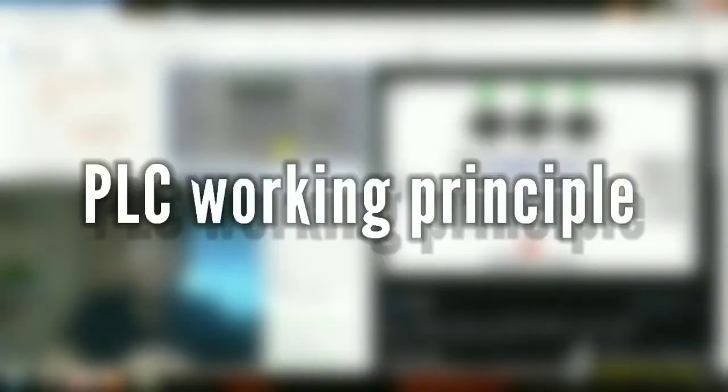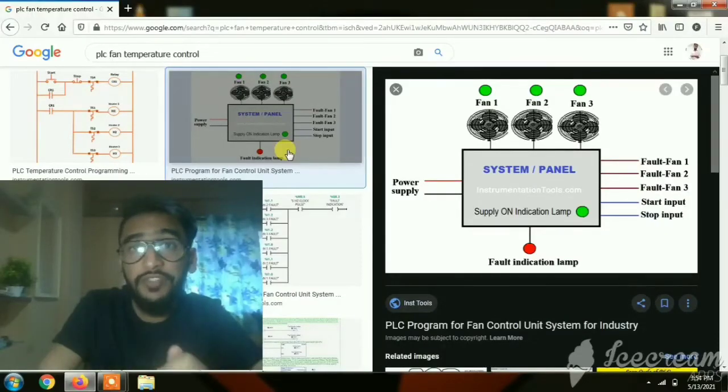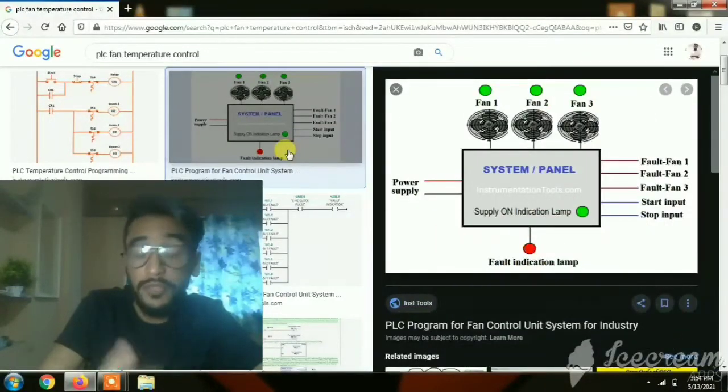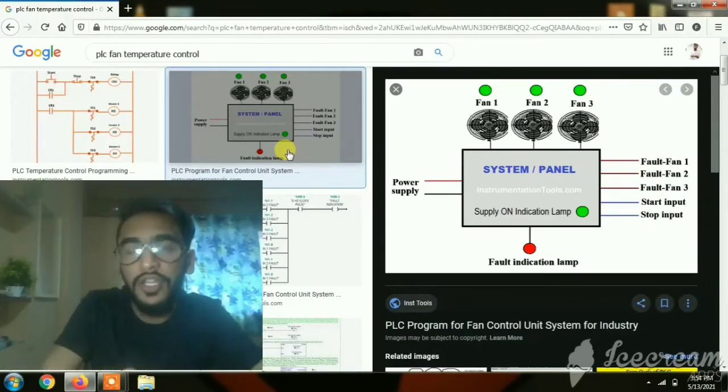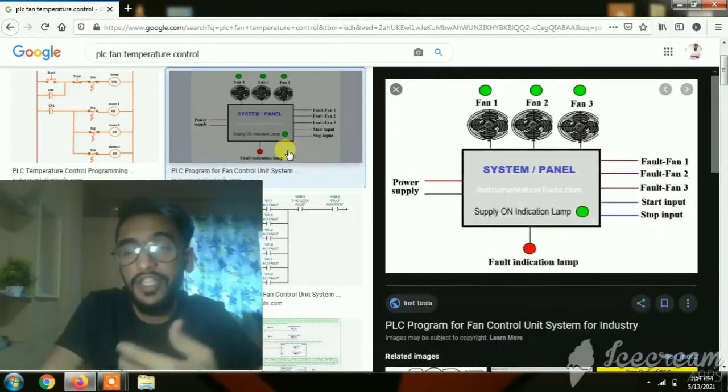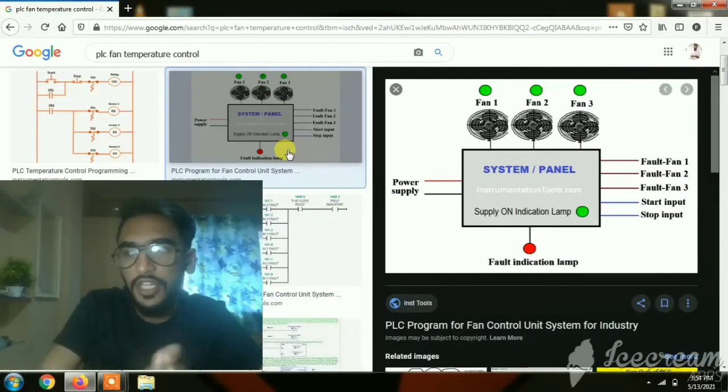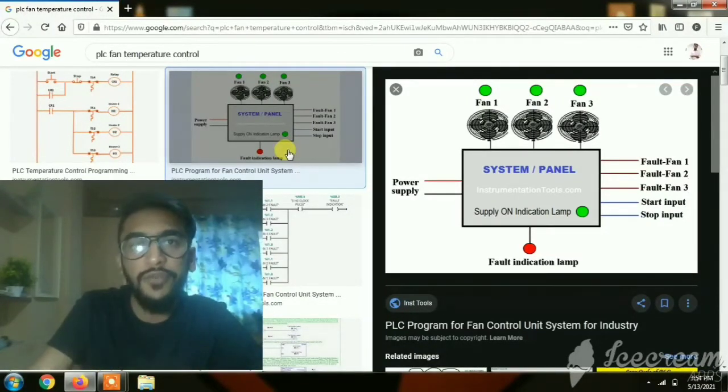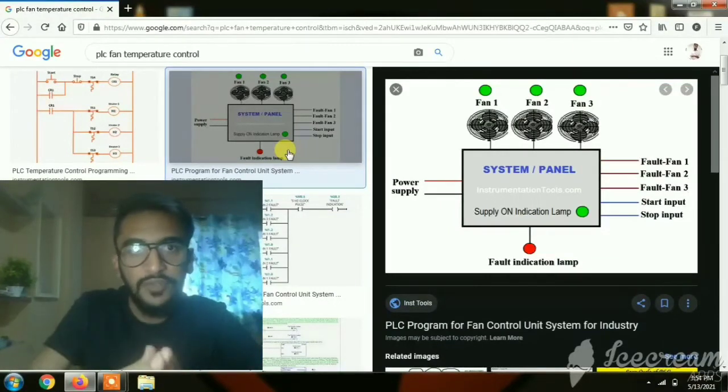Let's discuss the PLC working principle with an example where we use a fan to control the temperature of an industry. The fan would be controlled using a PLC, turning off and on according to the program we fed into the PLC. We would be using a temperature sensor that will sense the temperature of the industry. The PLC will fetch data from the temperature sensor when it sends a high temperature signal. At that time, PLC will fetch the data and switch on the fan by closing the relay channel connected with the fan.